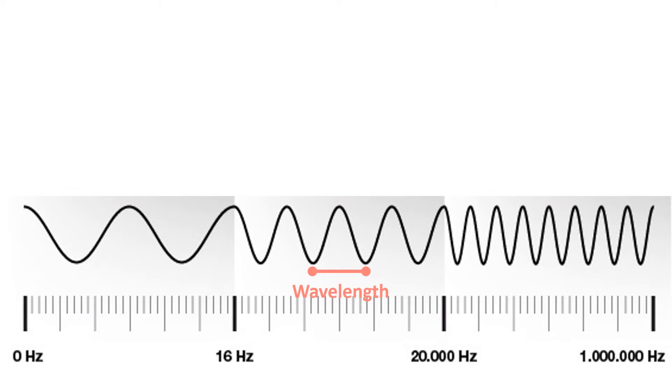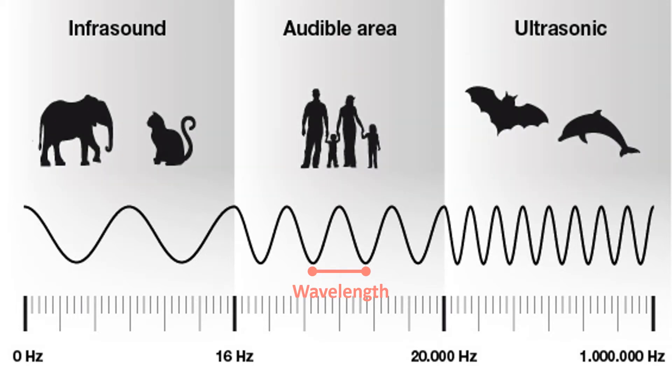The human ear recognizes sounds between 16 and 20,000 hertz. Below that range, some waves are called infrasound, and elephants and cats both generate and recognize such sounds. Above 20,000 hertz, we call sounds ultrasonic, and here we find bats and dolphins. Ultrasound machines will work with frequencies above one million hertz or one megahertz.